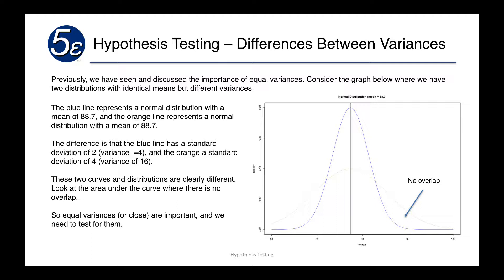Previously we had spoken about the importance of equal variances. Now let's understand why that's important. On the right we have a normal distribution curve. We actually have two.